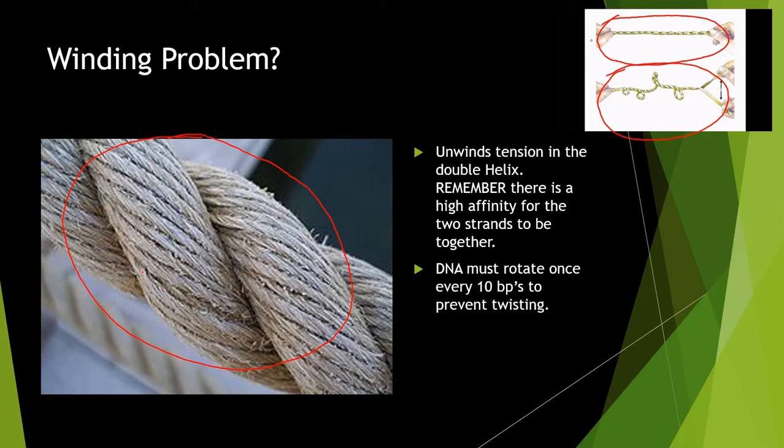But there's a problem with unwinding. The DNA must rotate once every 10 base pairs to prevent twisting. Remember, you have all this DNA packaged inside the nucleus. It's called supercoiling. You have these nucleosomes, chromatin, packaged with histone proteins. They're all packaged so tightly into the nucleus. So how are we able to transcribe that DNA? We have to unwind that double helix.